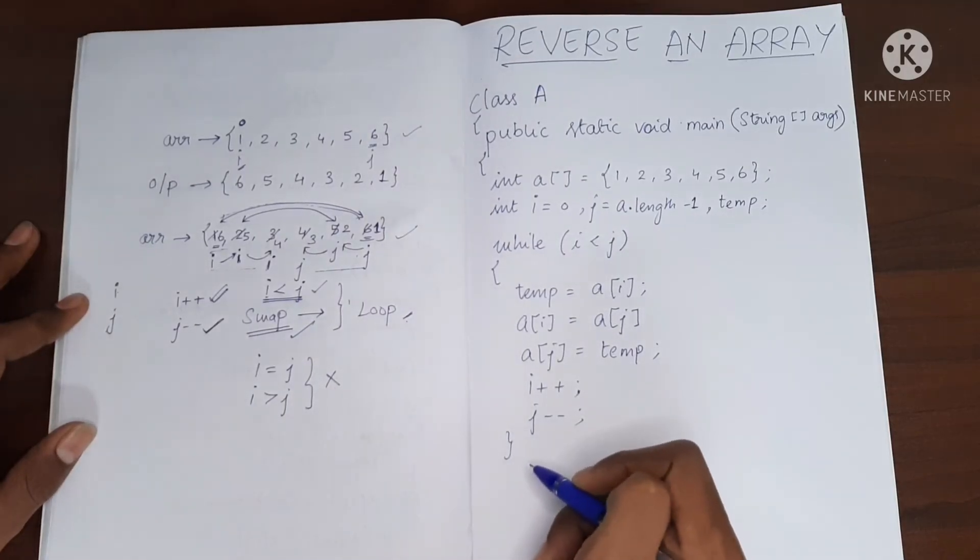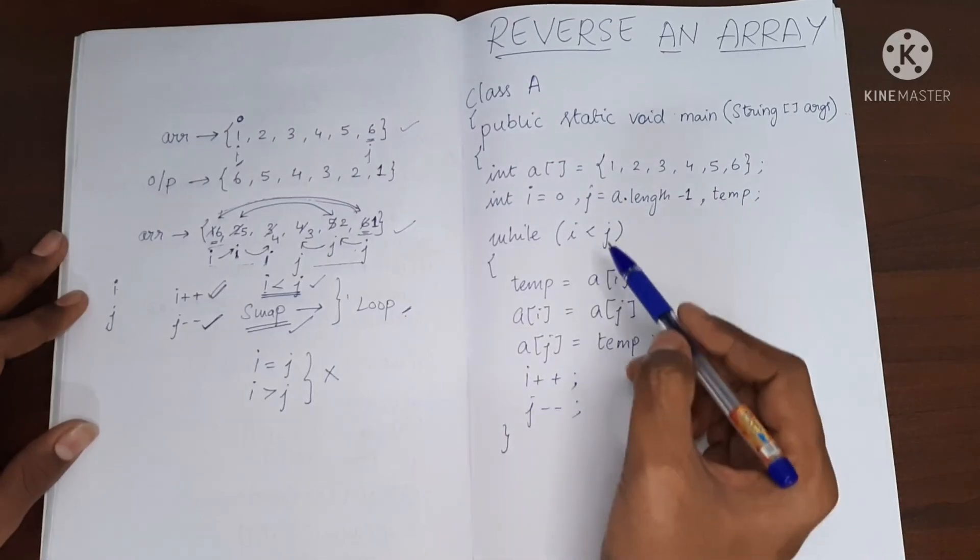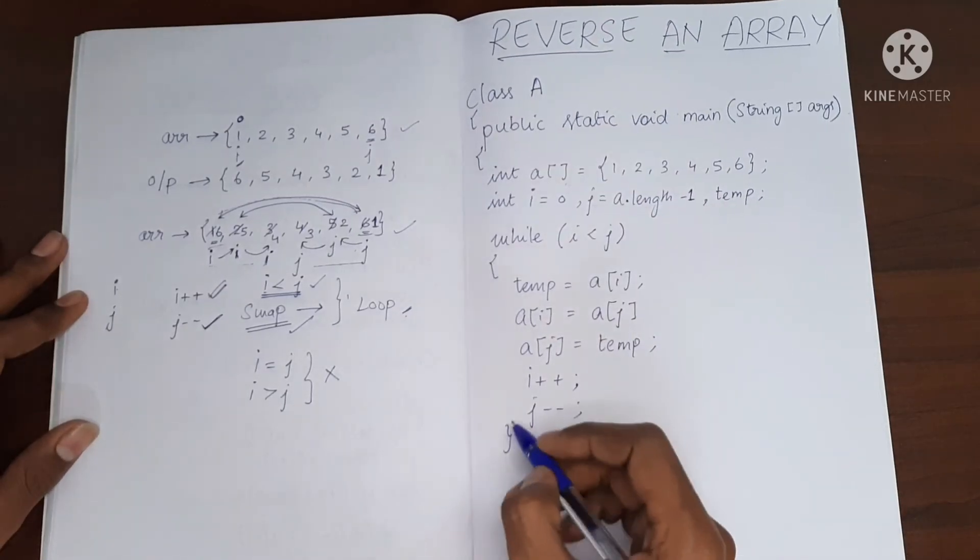That's all I need to do in this while loop and then outside I am going to print the array which is reversed.